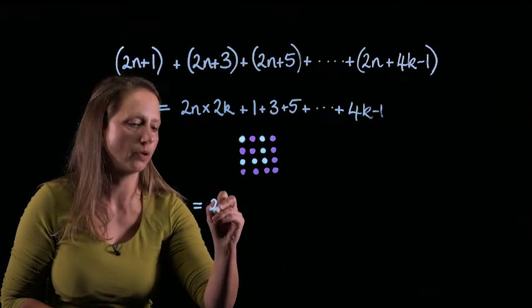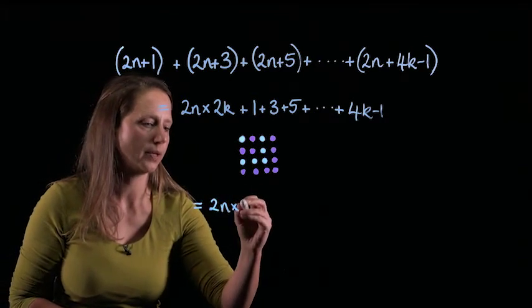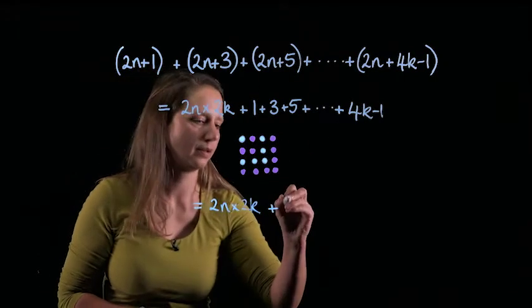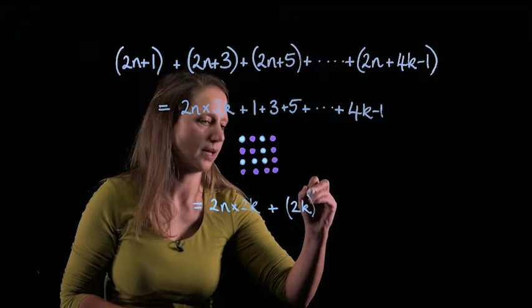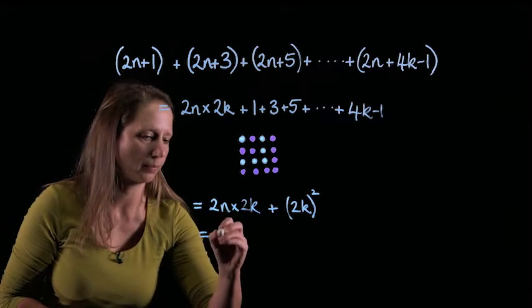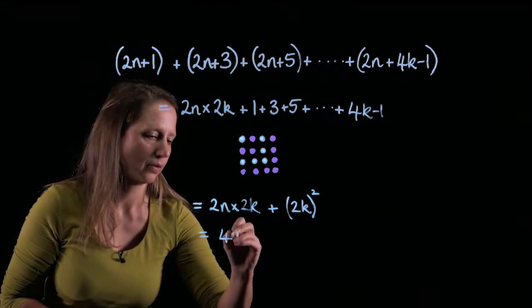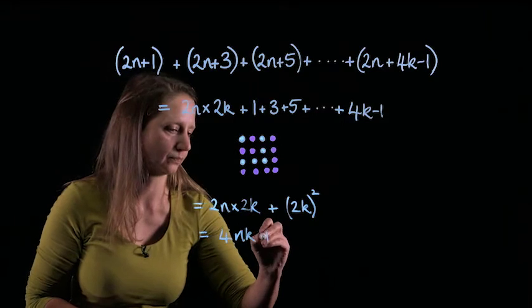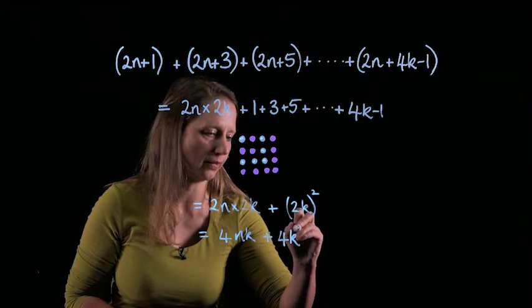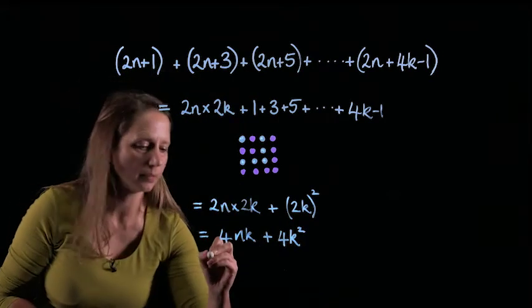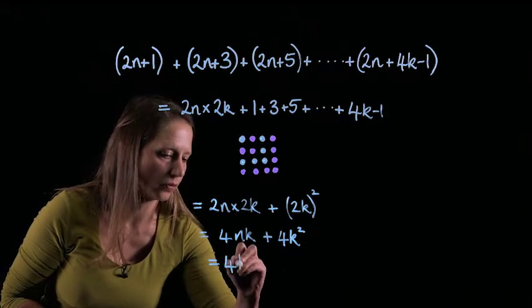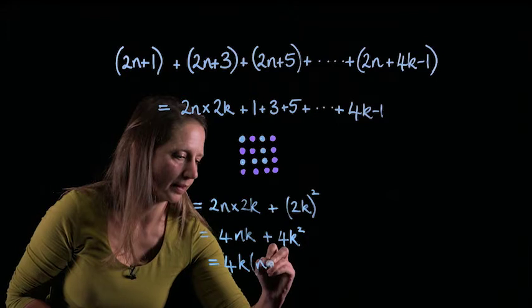And you need to think carefully about exactly what square number we get. But what we have got, 2n times 2k, and this becomes 2k squared. So let's just simplify this a bit: 4nk plus 4k squared. And this is crying out to be factorized: 4k times n plus k.